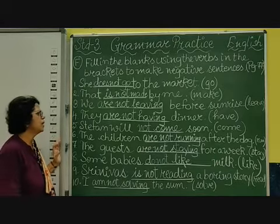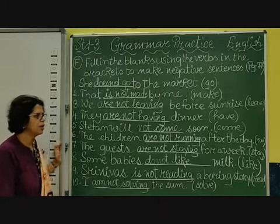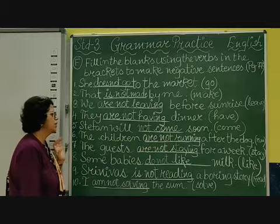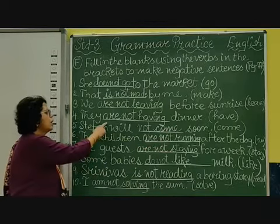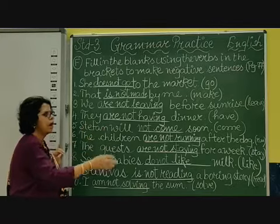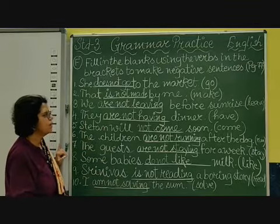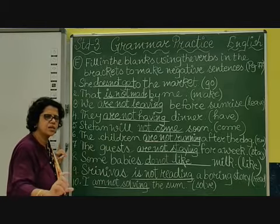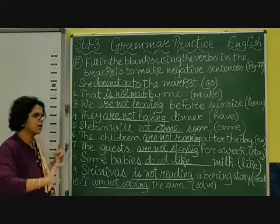Coming to the fourth one: 'They dash dinner,' and the verb given is 'have.' The answer is: 'They are not having dinner.' 'Are' is used because 'they' refers to many people, then the negative word 'not,' then 'having.' When writing in continuous form, 'have' becomes H-A-V-I-N-G — 'having.' They are not having dinner.